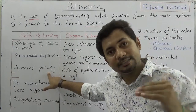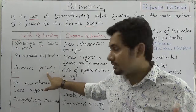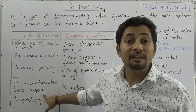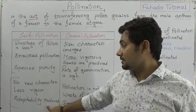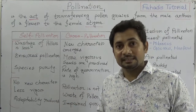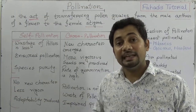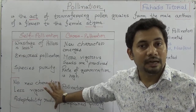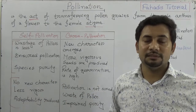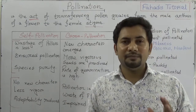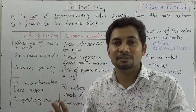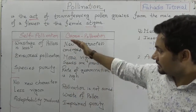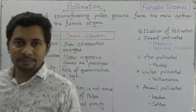Because species purity is maintained in self-pollination, no new character emerges. Seeds will be less vigorous, and as a result the adaptability of the seeds is reduced. These are the disadvantages of self-pollination. In your question paper, if asked about the differences between self-pollination and cross-pollination, or their advantages and disadvantages, use these points.